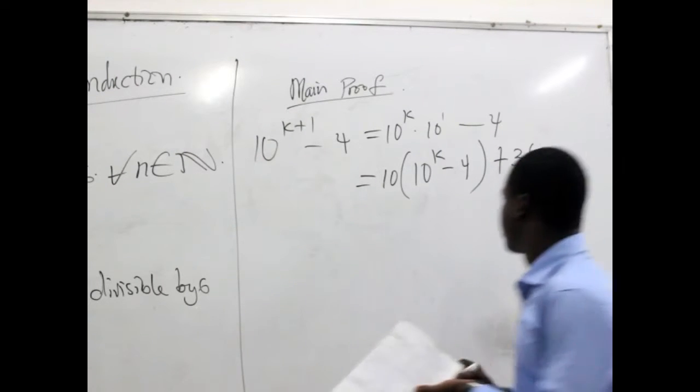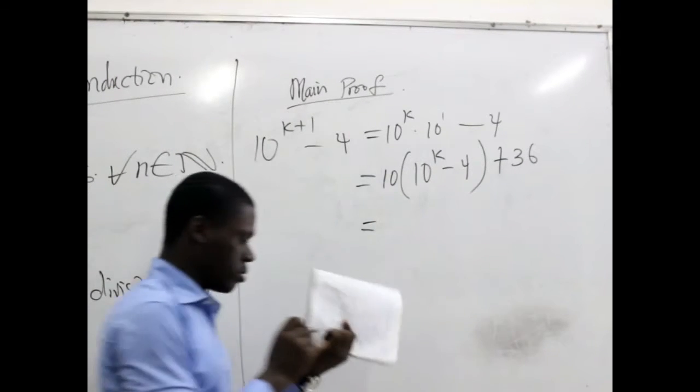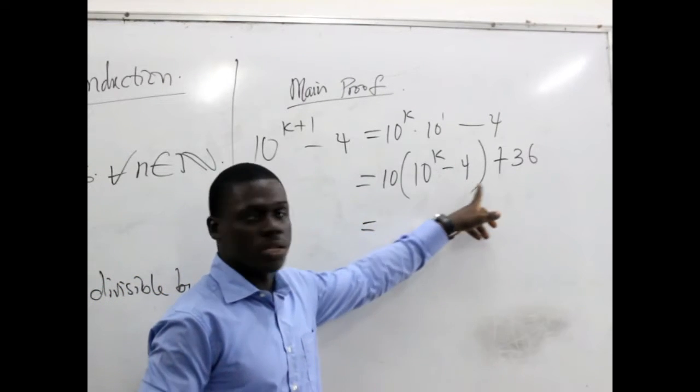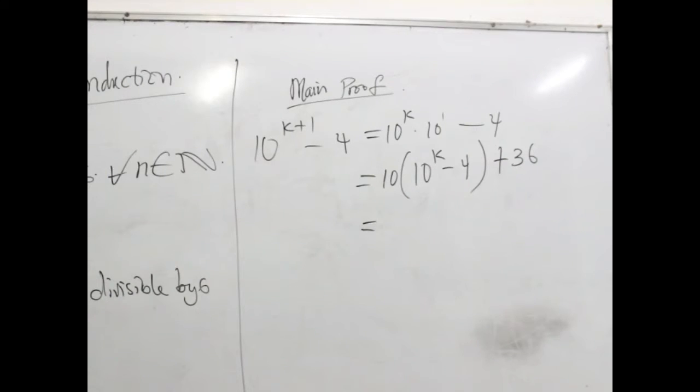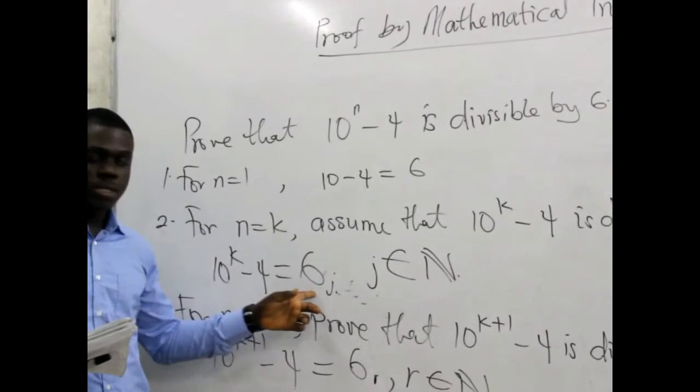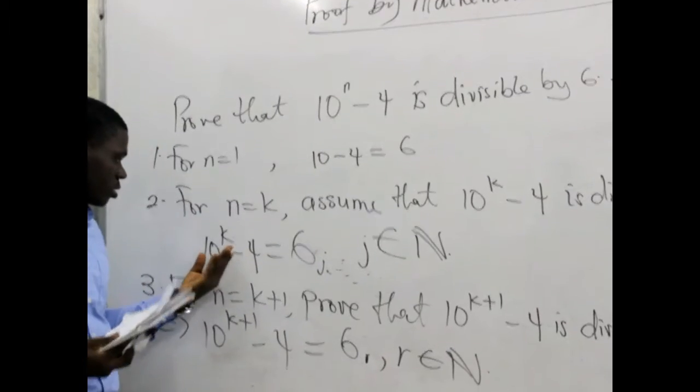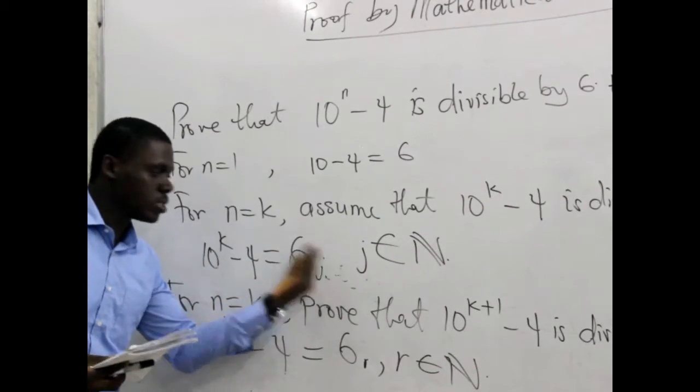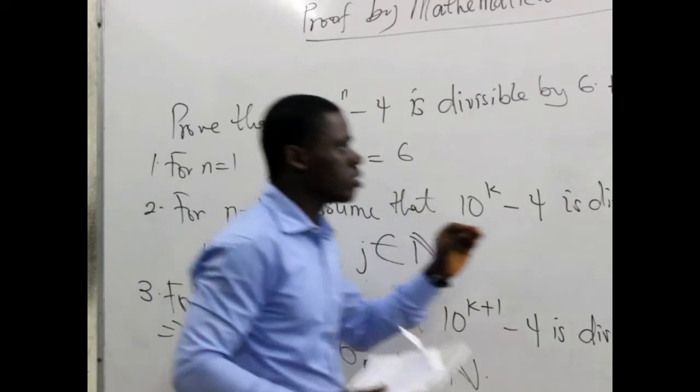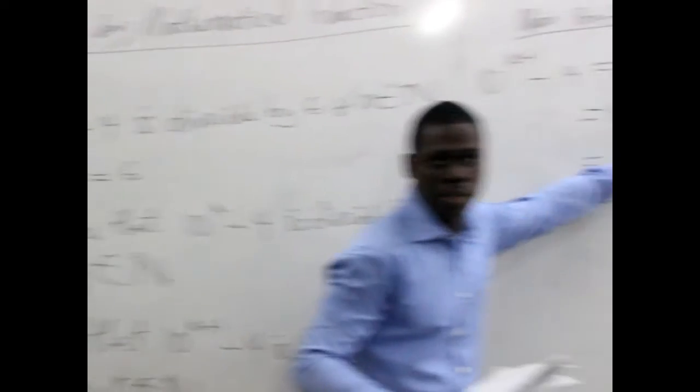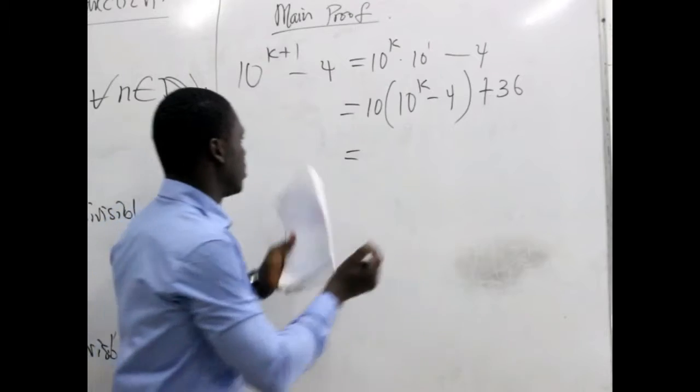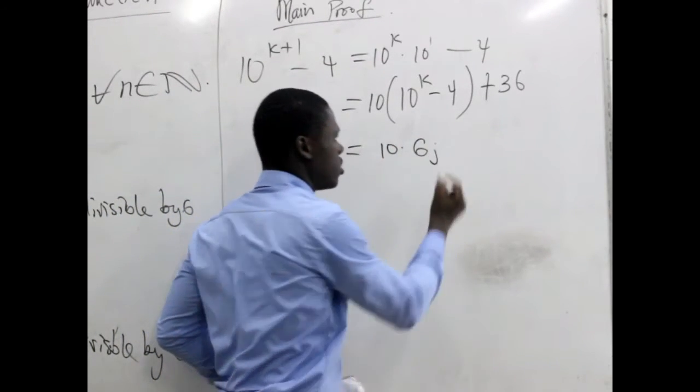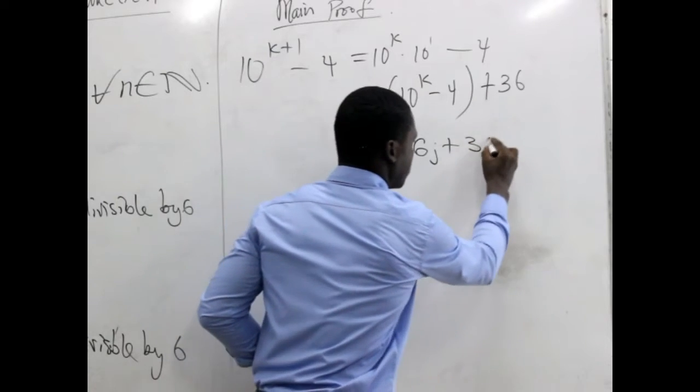Now having done that we realize that what is here, 10 to the power k minus 4, at this stage we say that it should be equal to 6j. So if 10 raised to power k minus 4 equals 6j, then you can replace 6j and place it here. So at the end of the day we now have 10 multiplying 6j then plus 36.